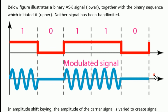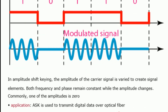In ASK (Amplitude Shift Keying), the amplitude of the carrier signal is varied to create signal elements, while both frequency and phase remain constant. Commonly, one of the amplitudes is 0. ASK is used to transmit digital data over optical fiber because one level remains constant — that level is easily identified as 0 — while any variation is considered as 1. That is why ASK is preferred for transmitting digital data over optical fiber.